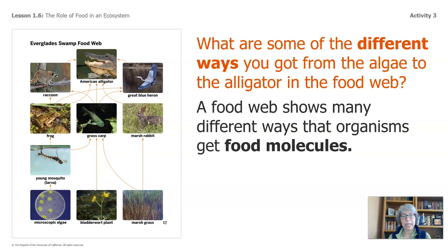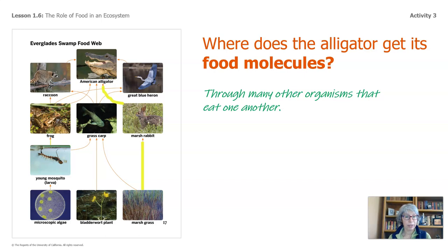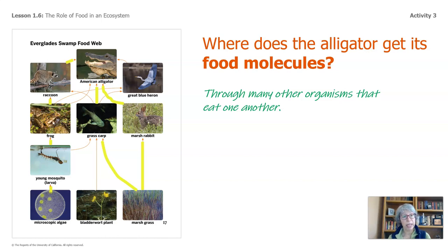A food web shows many different ways that organisms get food molecules. Where does the alligator get its food molecules? There are many other organisms that eat one another — let's trace that path. Here's one: the marsh grass is eaten by the rabbit, and the rabbit is eaten by the alligator. You can also go: marsh grass is eaten by the carp, and the alligator eats the fish in the water. And here's another: the microscopic algae are eaten by the mosquito larvae, the mosquito larvae are eaten by the frog, the frog is eaten by the raccoon, and alligators do eat raccoons. I'm sure you found other ways there.